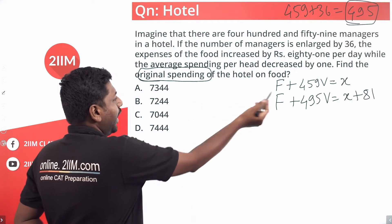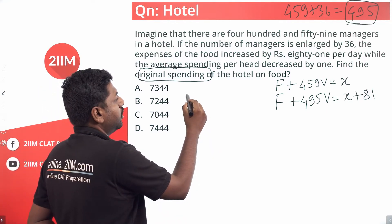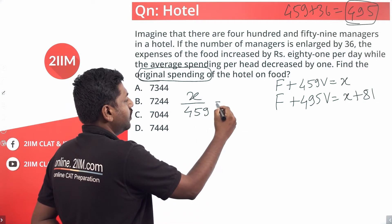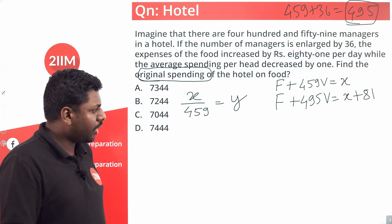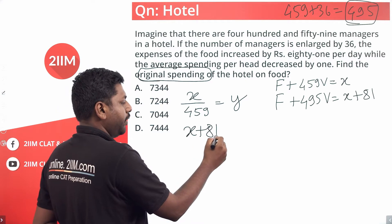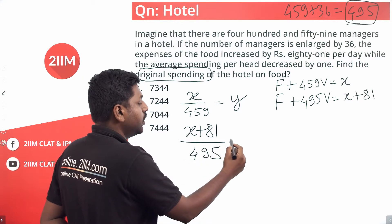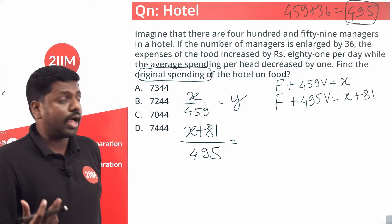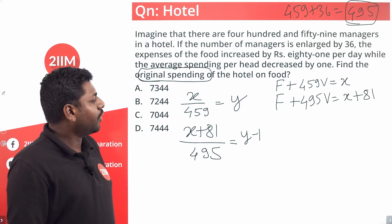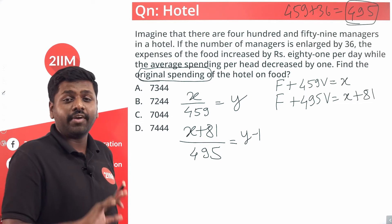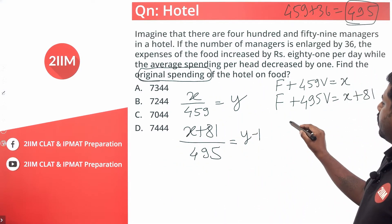The average per plate cost originally is x divided by 459, which we call y rupees. In the second case, x plus 81 rupees is spent by 495 managers. The new average decreased by 1, so the new average is y minus 1. Our final goal is to find x, but first let us figure out y.